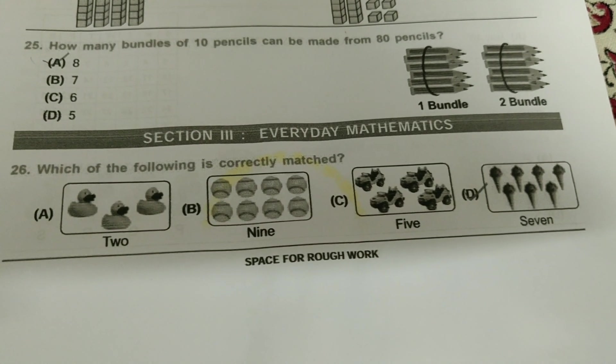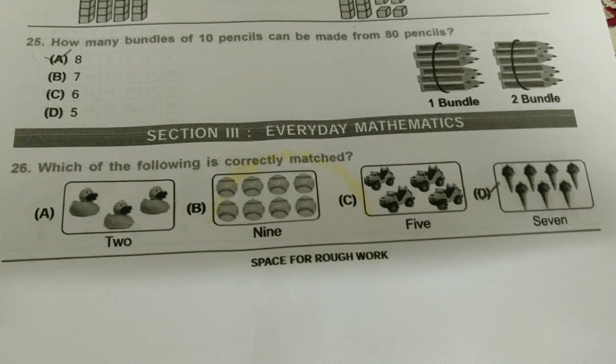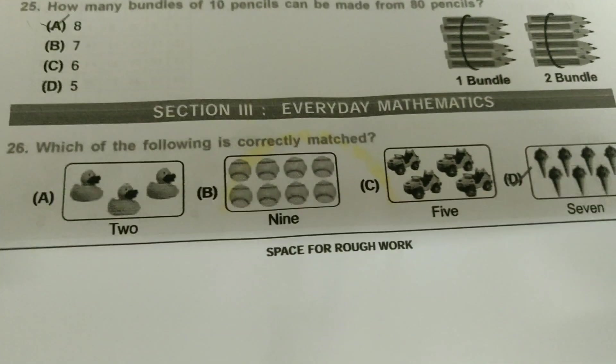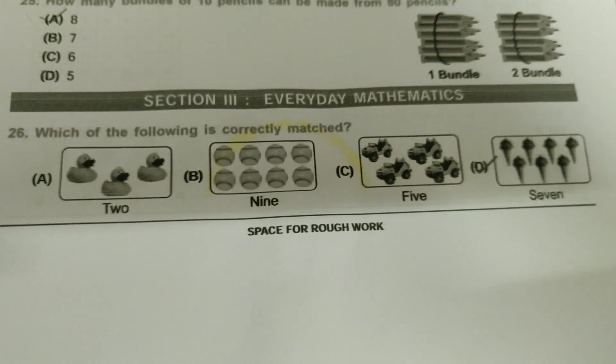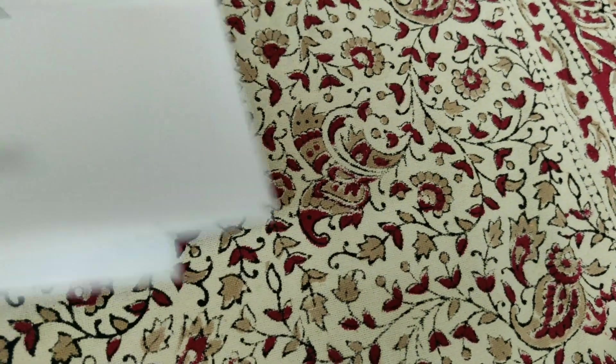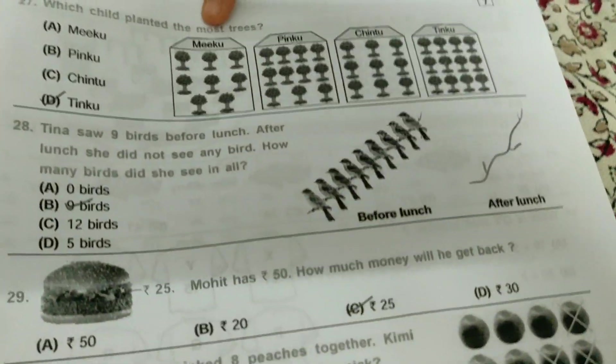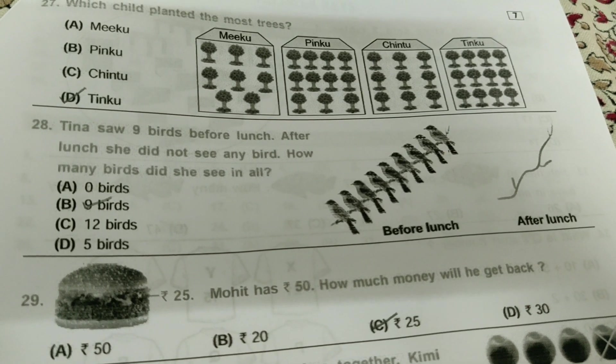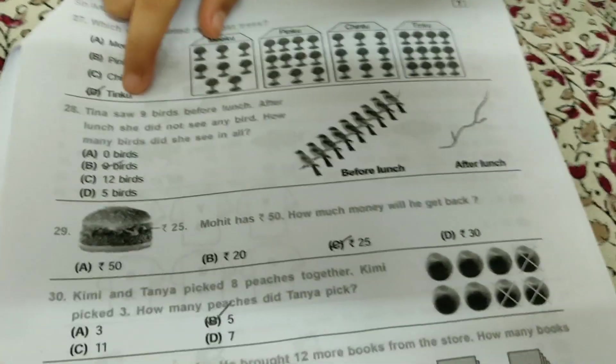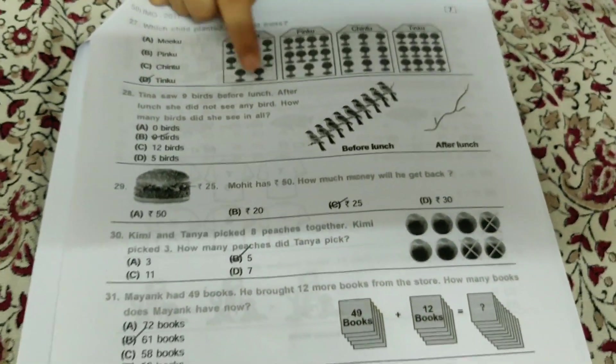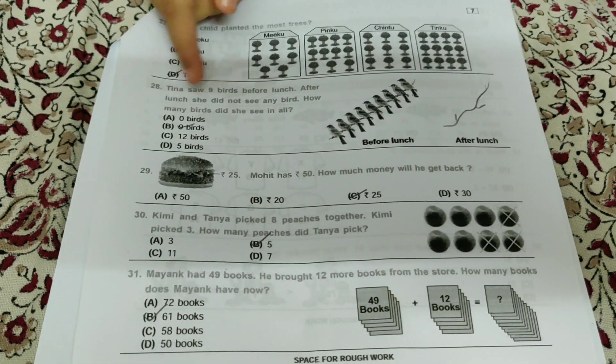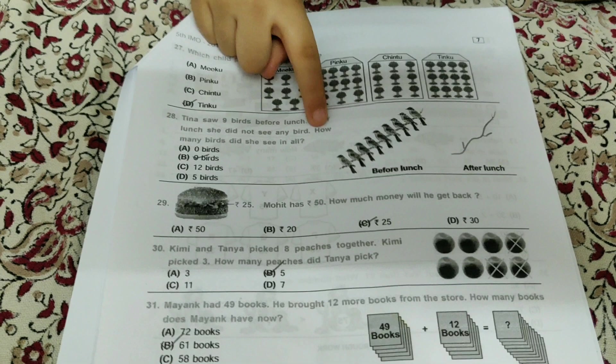Section 3, everyday mathematics. Which of the following is correctly matched? So it's D bit. Which child planted the most trees? Tinko. Tina saw 9 birds before lunch. After lunch, she did not see any bird. How many birds did she see in all? 9 birds.